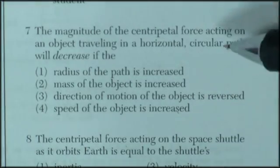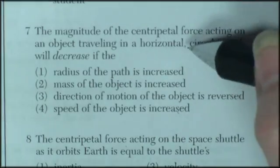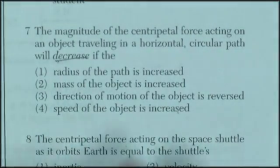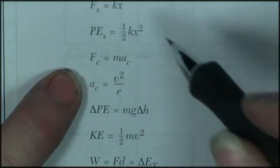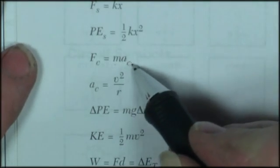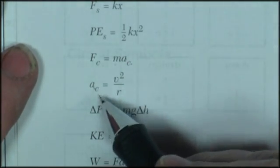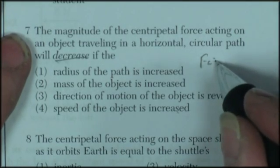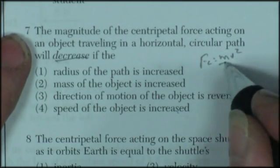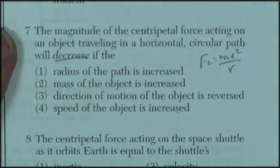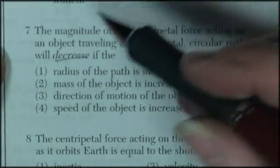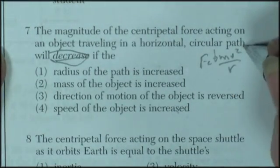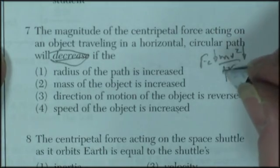Question seven. The magnitude of the centripetal force acting on an object traveling on a horizontal circle path will decrease. Let's go find centripetal force. Force centripetal is mass times acceleration centripetal. And acceleration centripetal is V squared over R. So I can say that my force centripetal is equal to MV squared over R. So I want the centripetal force to decrease. So I can decrease my mass, decrease my velocity, or increase my radius.